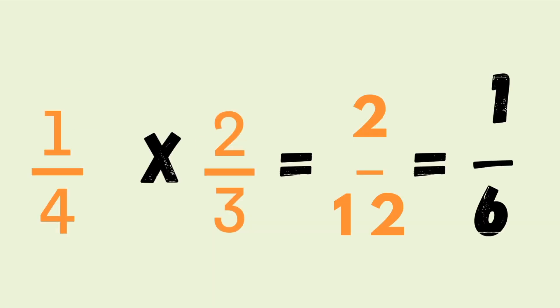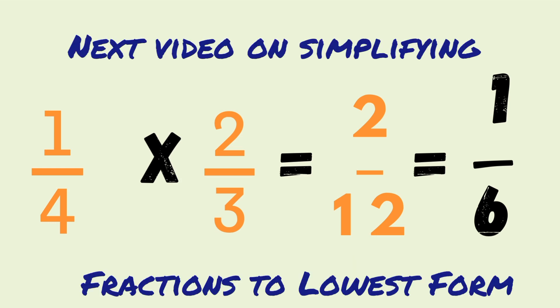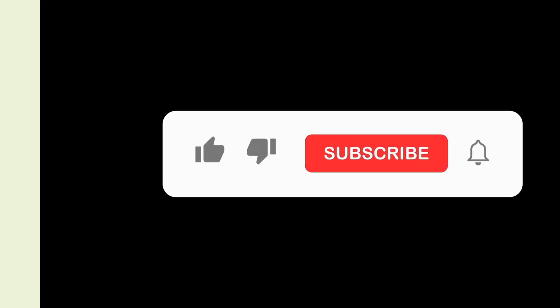1 times 2 is 2, 4 times 3 is 12. So the answer is 2 twelfths. But you can simplify this. So half of 2 would be 1 and half of 12 would be 6. So this is the lowest form.